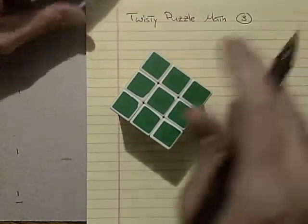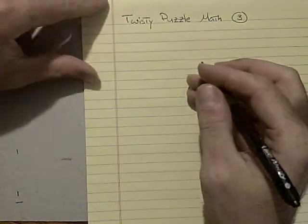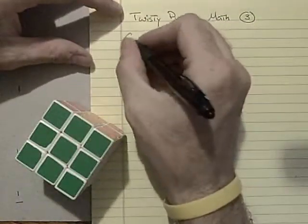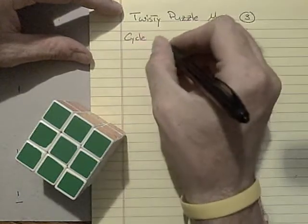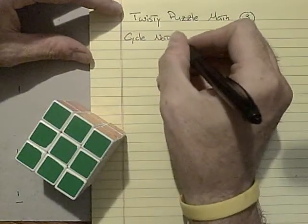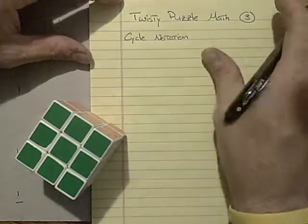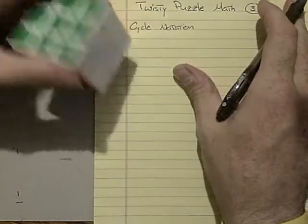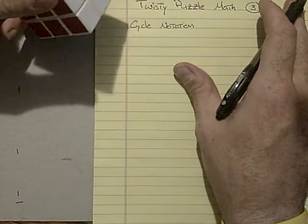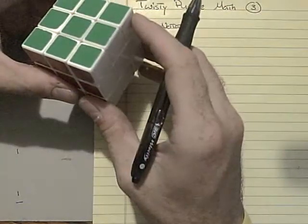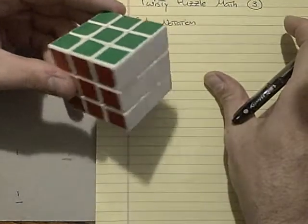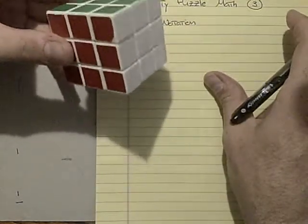Alright. So what I want to talk about now are a couple ideas. We want to start with the cycle notation. And I'm going to warn you ahead of time that I do this a little sloppy. I'll point out where I do it. But the basic idea is if I do a move on the cube, you want to be able to write down what happened and analyze what happened to say something interesting about it.